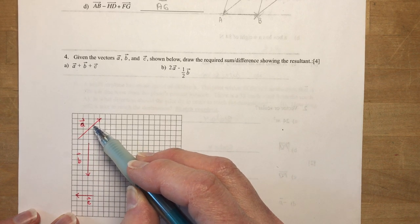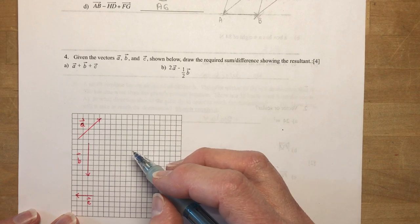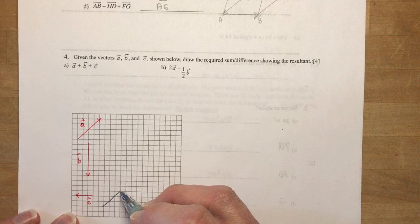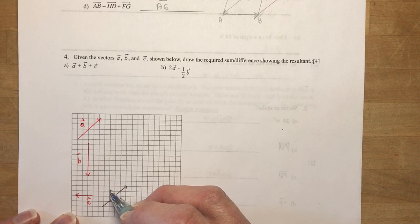So you want to make sure you're doing in the same direction. So I have one, two, three, four going up. So I'm going to start that one down here. Let's go 1, 2, 3, 4. There's my vector A.